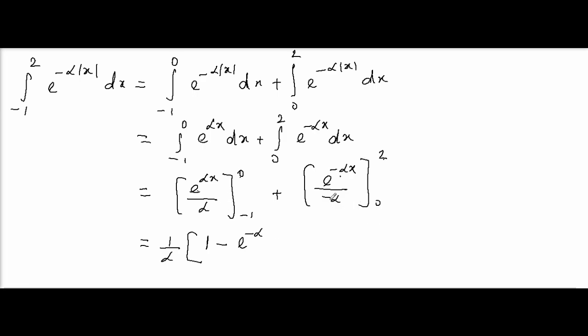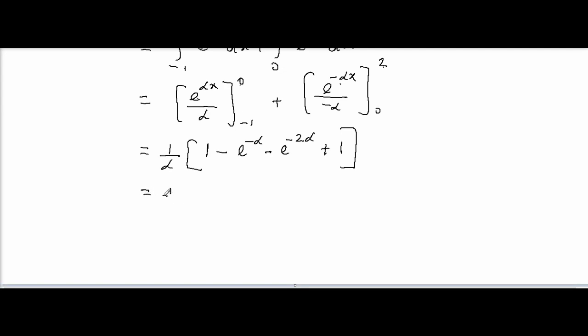And then lower limit substitute, with the minus sign in denominator and lower minus sign, so it will be plus e^0 is 1. Therefore, we have 1/α into (1 minus e^(-α)) plus... sorry, 2, 1 plus 1 is 2, minus e^(-α) minus e^(-2α).